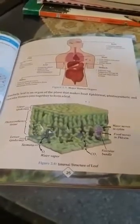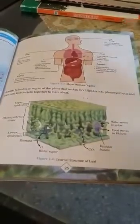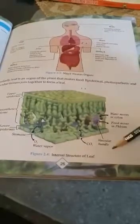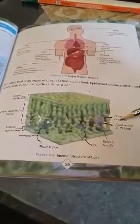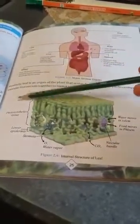Now we will learn about plant organs. The leaf is an organ of a plant that makes food for the plant. The structure of a leaf includes upper epidermis, photosynthesis tissues, lower epidermis, and stomata. Stomata are openings in the leaves from which oxygen and water vapors evaporate, and through which carbon dioxide enters. The leaf also contains vascular bundles consisting of xylem and phloem — water moves through xylem and food moves through phloem.